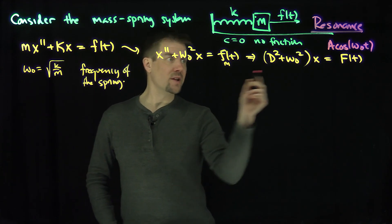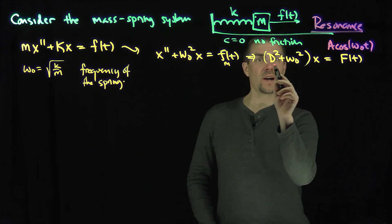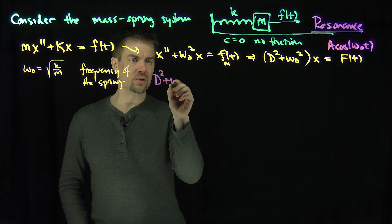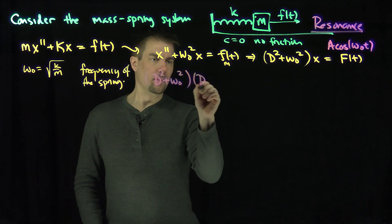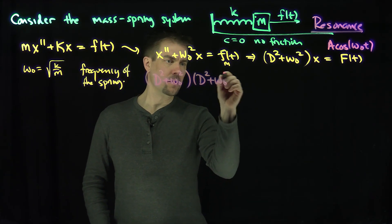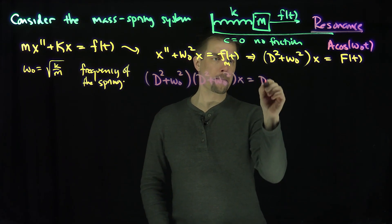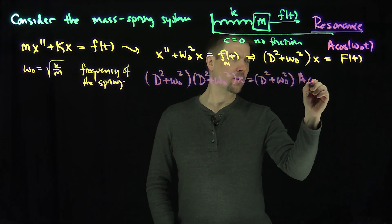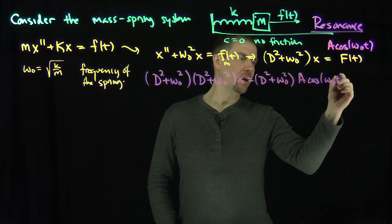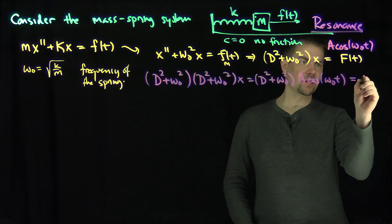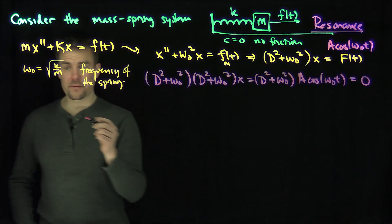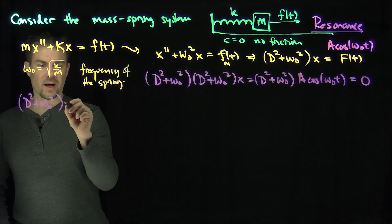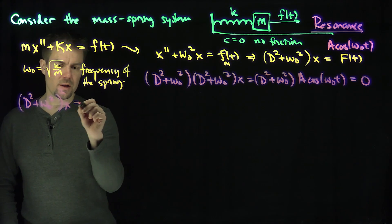How do we annihilate cosine of ω₀t? We annihilate that with (D² + ω₀²). So I will hit (D² + ω₀²) on both sides of the equation for cosine ω₀t. This operator is going to annihilate cosine of ω₀t, giving zero. So now we have the homogeneous differential equation: (D² + ω₀²) applied to x, quantity squared, equals zero.